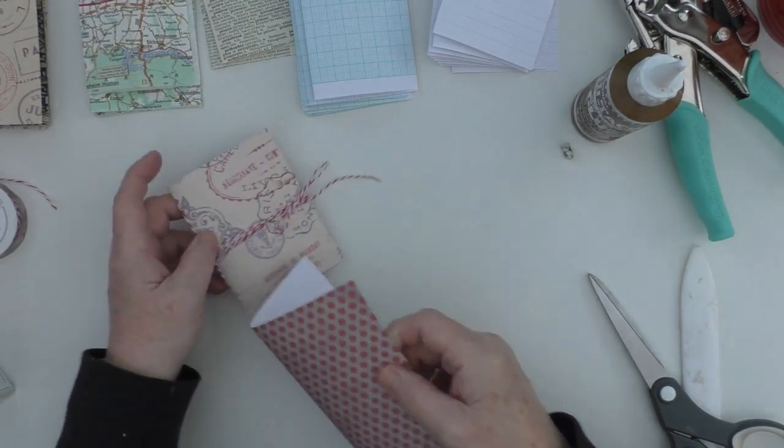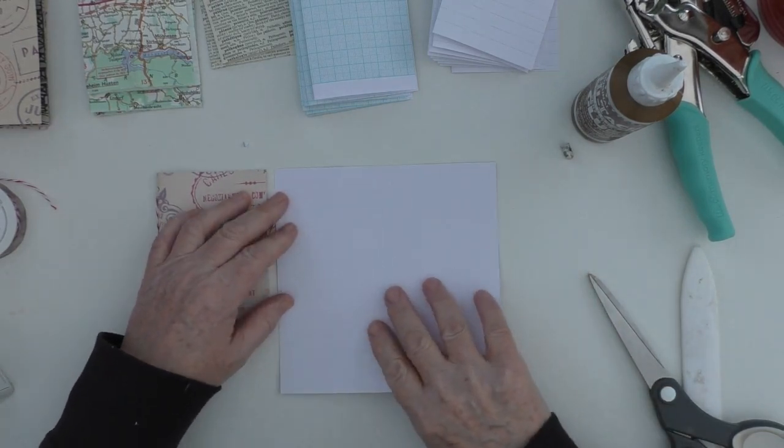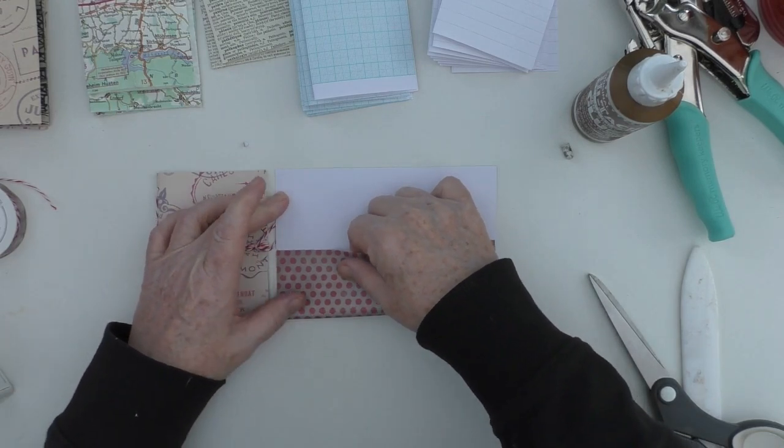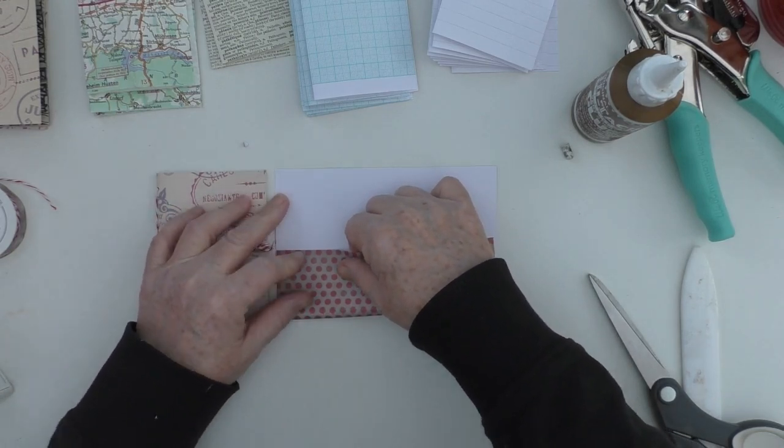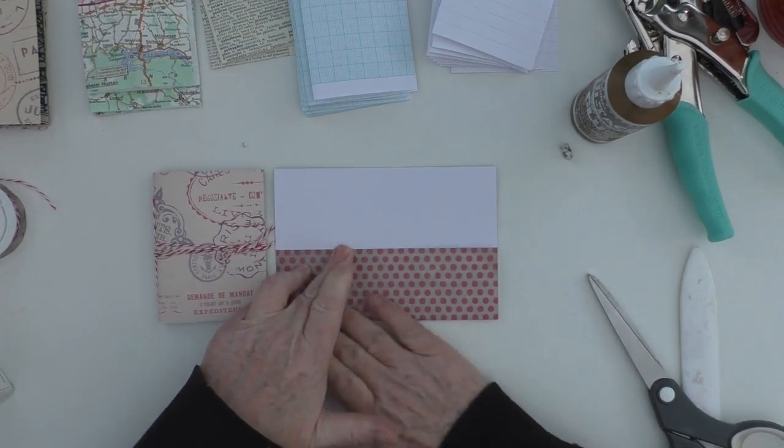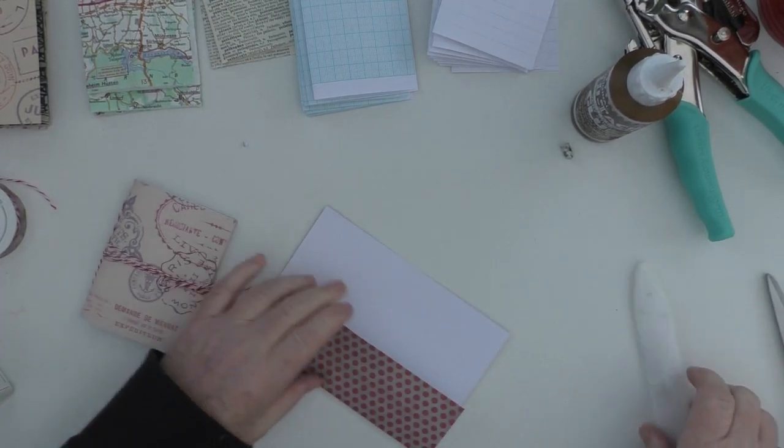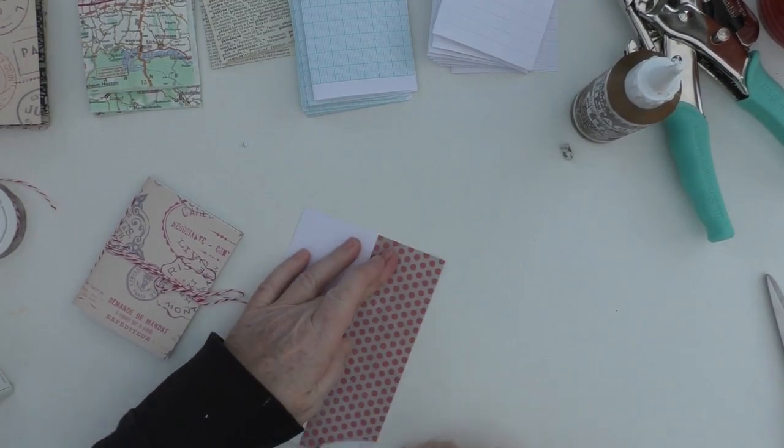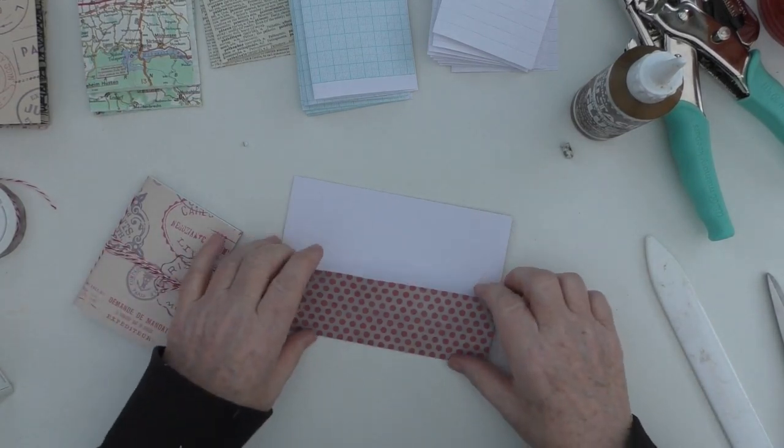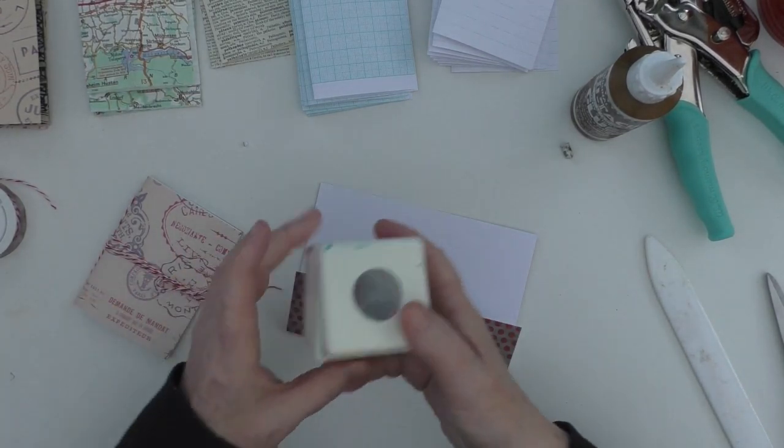So just showing you size-wise, it will be the same width, roughly. And all I'm going to do is try and make it the same size lengthwise. And I'm just folding that up at the bottom. So no detailed measuring here of any sort. I'm going to use the bone folder just to get that line in place.